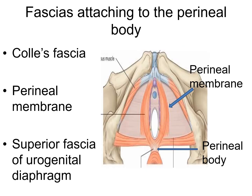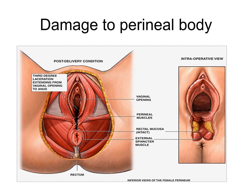Regarding fascias attached to the perineal body: the posterior borders of all three fascias of the urogenital diaphragm are attached to the perineal body. These are Colles' fascia, the perineal membrane, and the superior layer of the urogenital diaphragm.